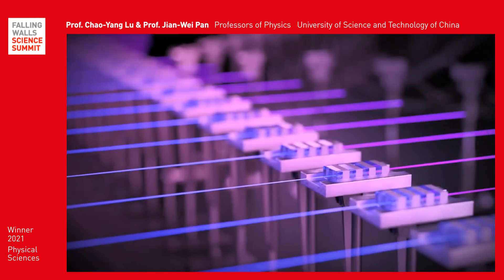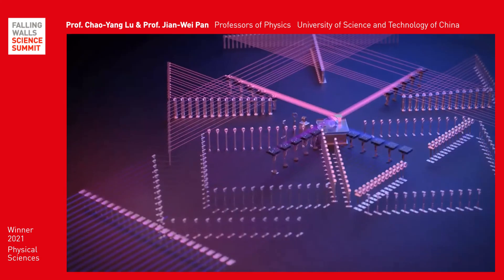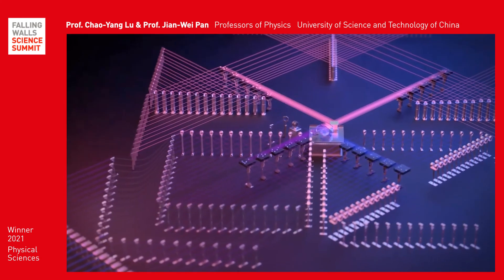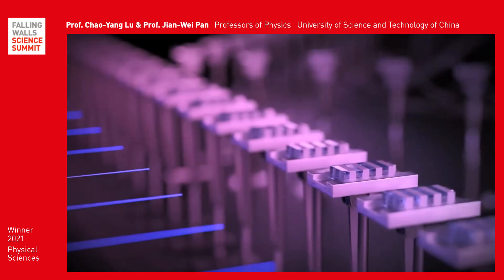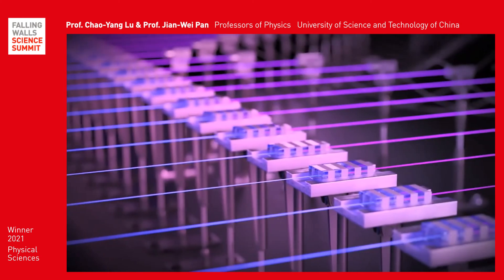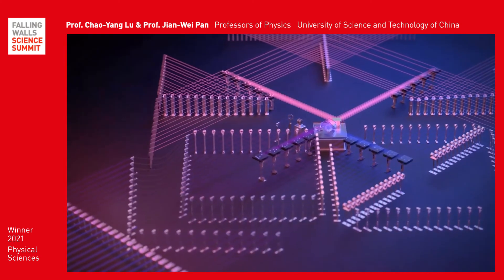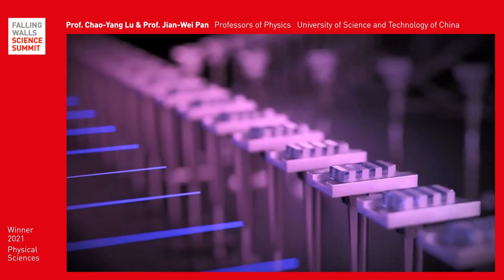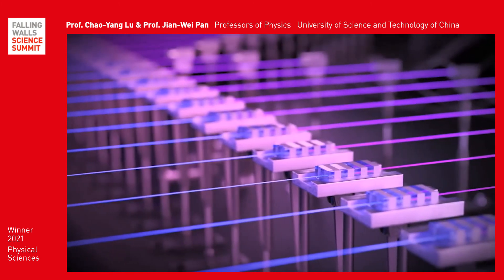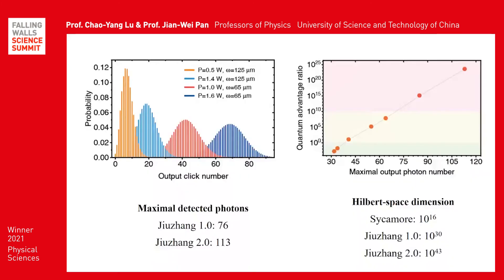In our experiment, we sent in 50 single-mode indistinguishable squeezed states into a 100-mode interferometer, with 100 single-mode single-photon detectors at the output. The whole optical setup is phase-locked with a precision of 15 nanometers. Eventually, we detected up to 76 photons in the output, which corresponds to a Hilbert space dimension of 10 to the power of 30.